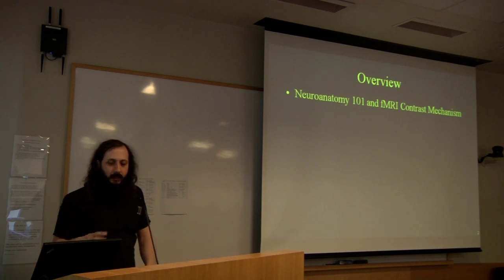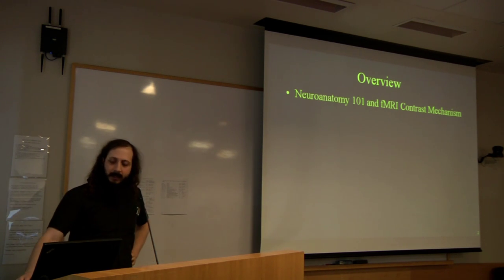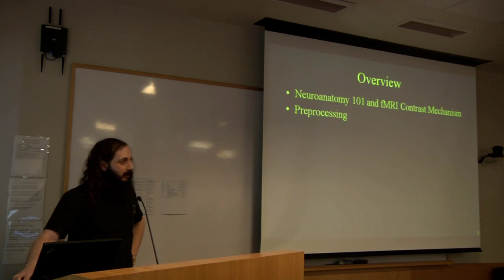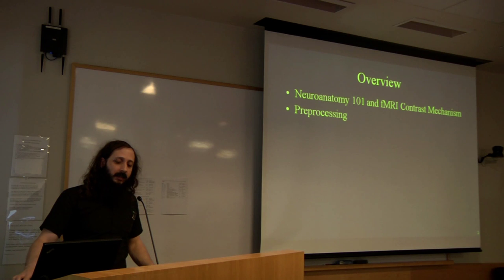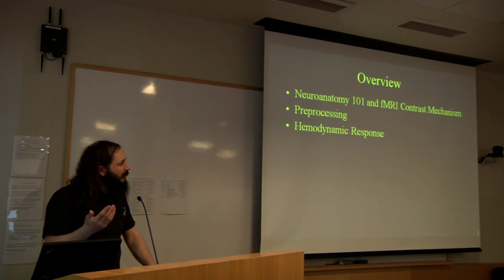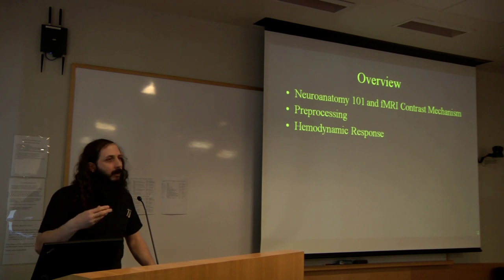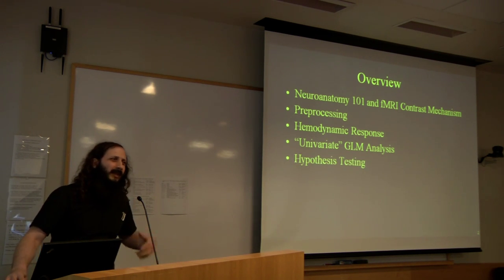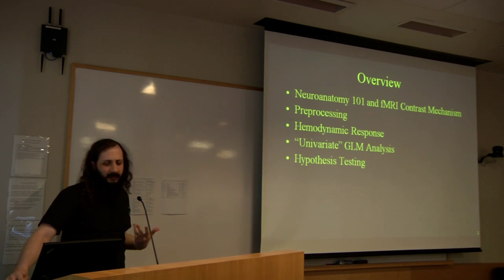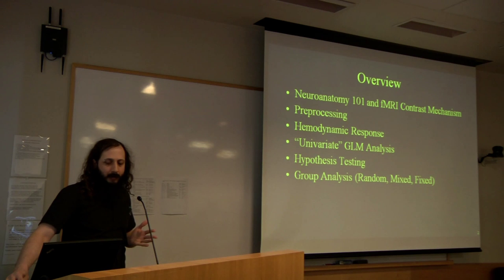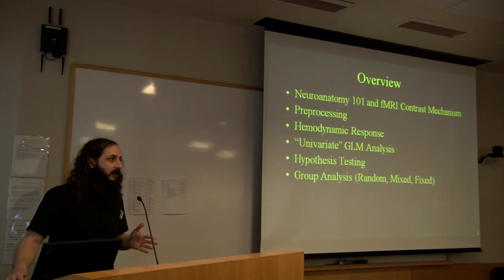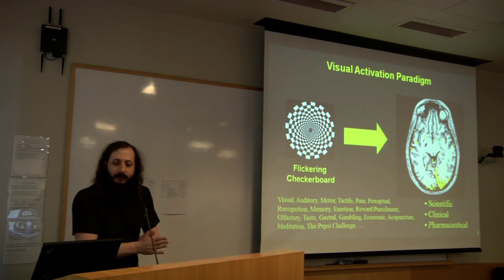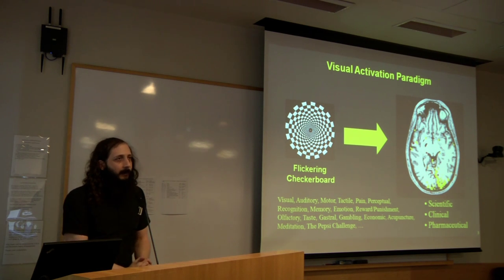To give a quick overview: first we'll talk about fMRI contrast mechanism for context, then pre-processing of the data, then the hemodynamic response and how we integrate the hemodynamic response function into our analysis. Then we'll describe the univariate general linear model analysis, which is the most common analysis employed. We'll describe how this can be viewed under hypothesis test theory, and move on to group analysis discussing both random and mixed effects as well as fixed effects analysis.